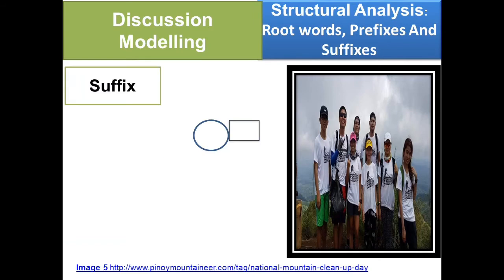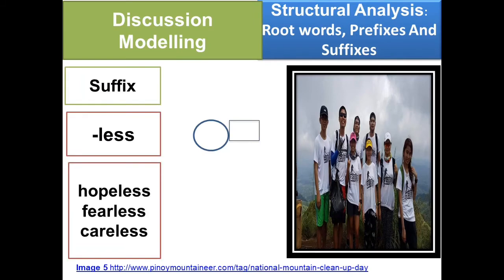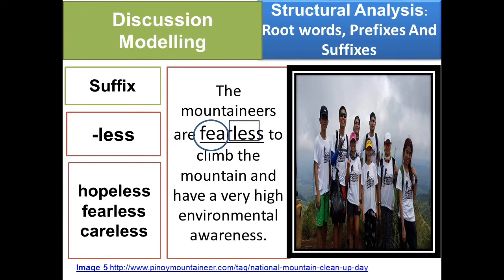Let's have the second suffix, 'less.' Example words: hopeless, fearless, careless. Example sentence: The mountaineers are fearless to climb the mountain and have a very high environmental awareness. As you can see, the underlined word is fearless. The root word is fear and the suffix is 'less.' Fearless means lacking of fear or brave. The opposite word is coward.